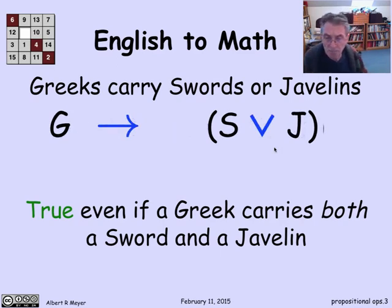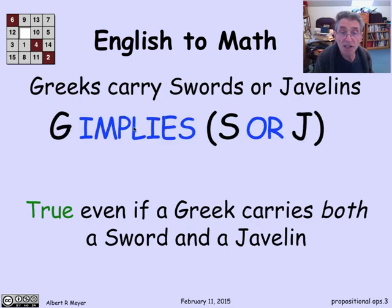There's many standard notations for these logical connectives that build up larger propositions. This v symbol or disjunction symbol is used by logicians often instead of or. This arrow means implies. I'm not going to ask you to memorize these symbols. We'll just stick to the words.